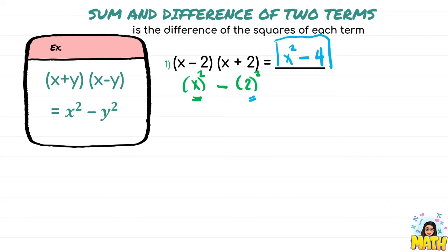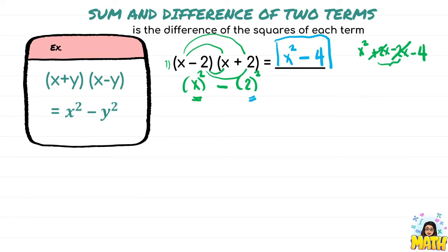You can still verify using the FOIL method: x times x is x squared; outer terms x times 2 is positive 2x; inner terms negative 2 times x is negative 2x; last terms negative 2 times 2 is negative 4. Notice that the outer and inner terms always cancel each other, resulting in 0. Therefore we have the remaining x squared minus 4.